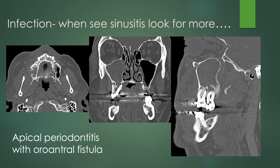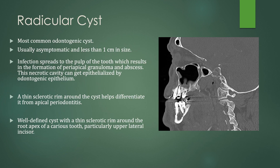So when you have this connection in the bone, this is called an oroantral fistula. When I see these, I measure the size of the fistula on all of the planes of imaging and describe which tooth it is related to.